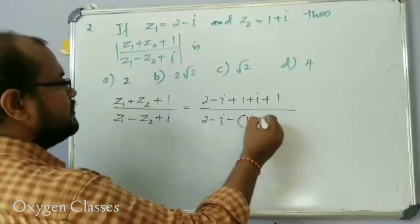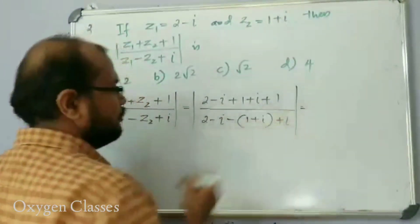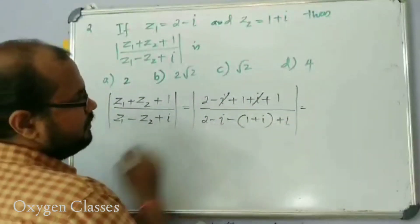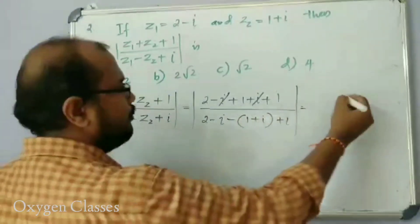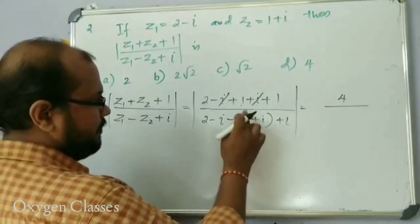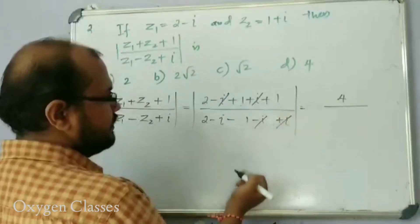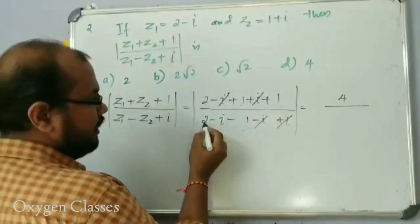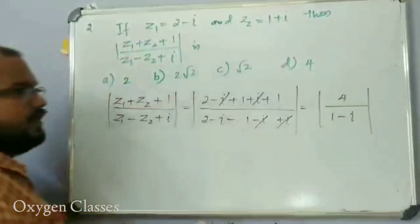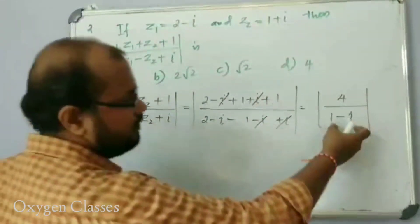In the numerator, minus i plus i cancels out: 2 plus 1 plus 1 gives 4. In the denominator, minus i plus i also cancels, leaving 2 minus 1 = 1. So the expression simplifies to 4 divided by (1 minus i).